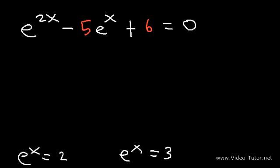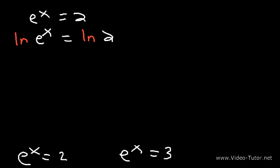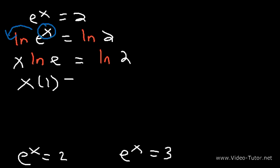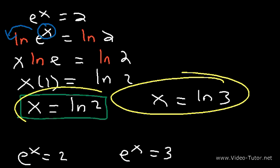Let's focus on these two equations. If e to the x is equal to 2, we need to take the natural log of both sides: ln of e to the x equals ln of 2. A property of natural logs lets us move the exponent to the front, so x times ln e equals ln 2. Since the natural log of e is 1, x equals ln 2. Following the same process for the other equation, x equals ln 3. So the two answers are ln 2 and ln 3.